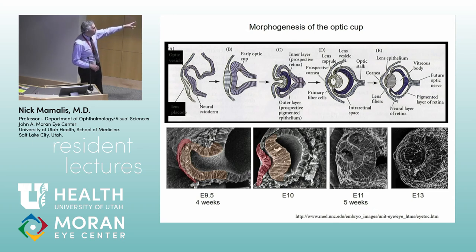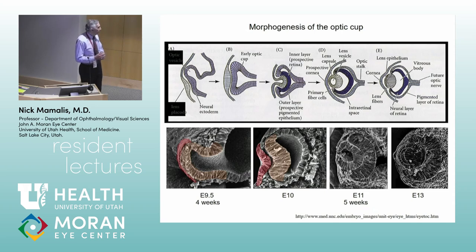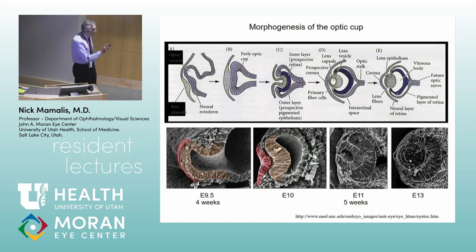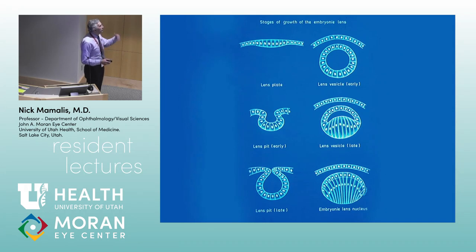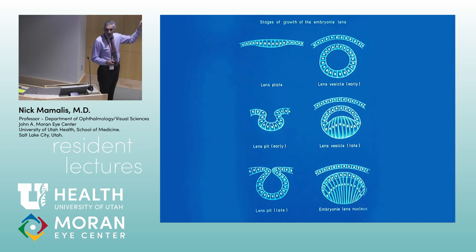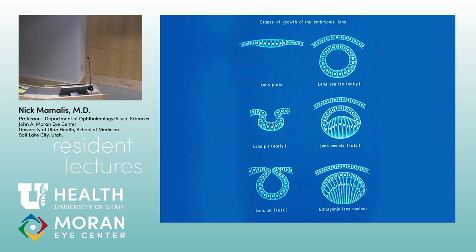These are chick embryos, but interestingly enough, chick embryos look exactly like human embryos at the same stage of development from four to five weeks of gestation. This shows it again in a schematic. Once the lens vesicle pinches off, it's an empty circle. What happens is the lens epithelial cells grow from the posterior surface anteriorly. These primary lens fibers come all the way forward, fill the lens completely, and that's what forms the embryologic lens nucleus.